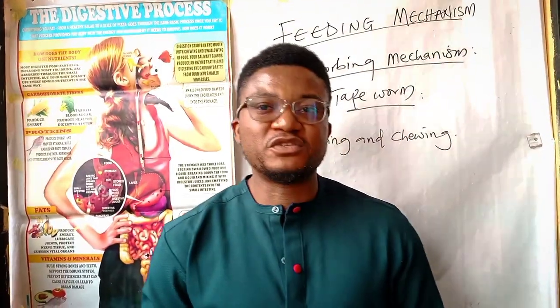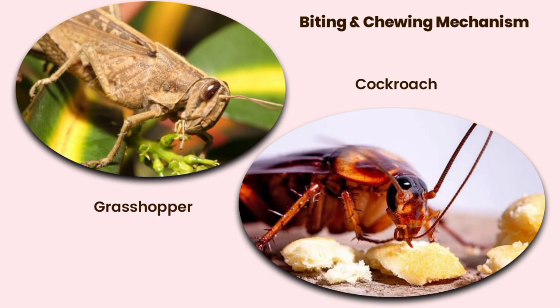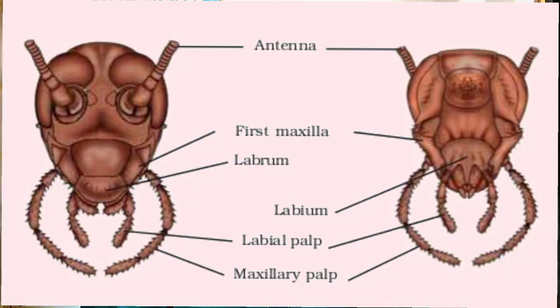Number two is the biting and chewing mechanism. Examples of animals that exhibit these mechanisms include the grasshopper and the cockroach. They both have mouthparts adapted for biting and chewing. These parts include the labrum which is the upper lip, the mandibles, the maxilla, and the labium which is the lower lip.